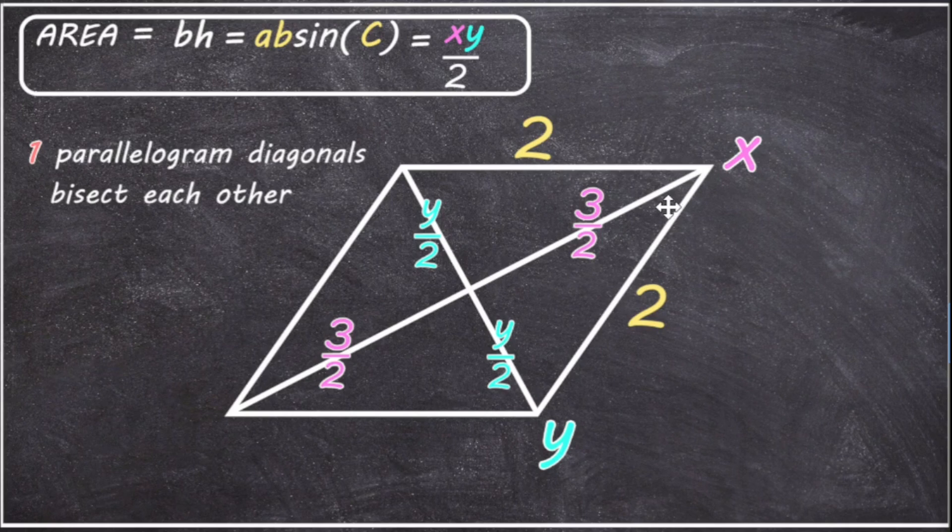Now it actually looks like we might be able to use Pythagoras to figure out the length of Y over two. If this is a right-angled triangle, then Pythagoras will work. But we have to be absolutely certain that it is. Otherwise our values will be inaccurate. And here is where two other parallelogram properties will be useful.